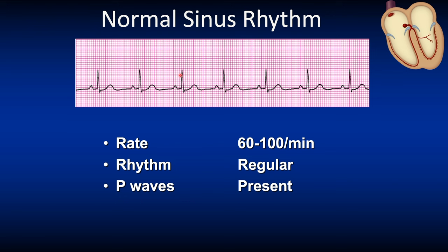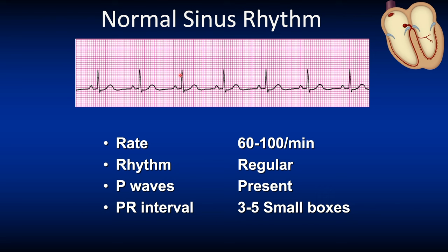The PR interval is three to five small boxes, meaning 0.12 to 0.2 seconds. We measure it from the beginning of the P to the Q wave and it's consistently the same, staying within normal limits. The QRS complex is narrow, meaning three boxes or 0.12 seconds or less. The QRS complexes are the same and narrow. Let's review what a normal sinus rhythm looks like on a monitor.